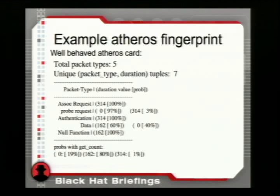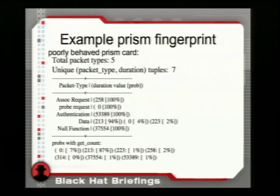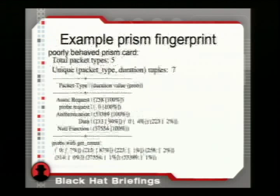Here's an Atheros fingerprint example. Atheros cards seem to follow the standard pretty well. An association request packet from an Atheros card uses duration value 314 100% of the time. Probe requests use duration 0 about 97% of the time, and 314 about 3% of the time — not sure why. Here's a PRISM card example. PRISM cards are older and people are still struggling to implement the standard. In authentication packets, you see a duration value of 53,389 — that's actually an illegally long time. Any duration value above 32,767 is supposed to be ignored, but this card sends numbers that are absolutely wrong.